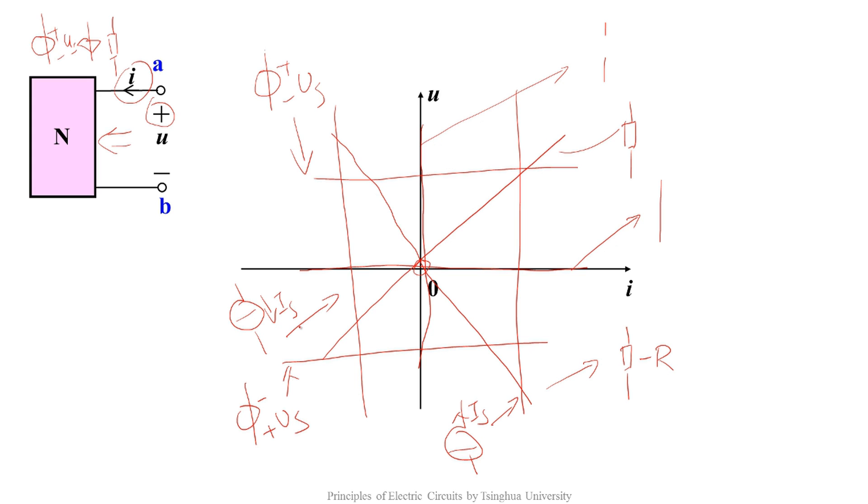My question is, do they represent all the conditions? No. Do you find that these lines are all special lines in UI plane? They are either parallel to the horizontal axis or parallel to the vertical axis, or lines across the origin point. The common lines in the UI plane are these lines.